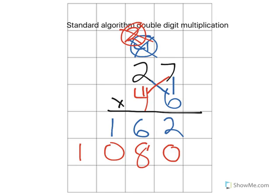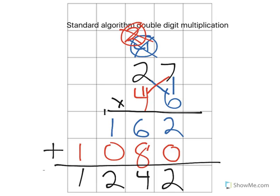The next thing I do, the last step is I go ahead and I add both my partial products together. 2 plus 0 is 2. 8 plus 6 is 14. Carry my 1. 1 plus 1 is 2. Then 1 plus nothing is 1. So 27 times 46 is 1,242.